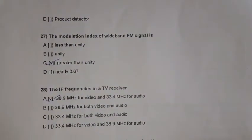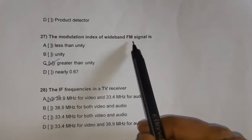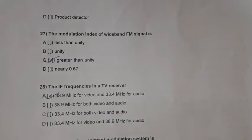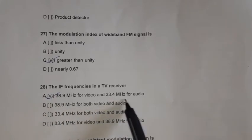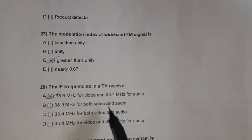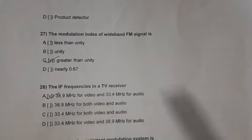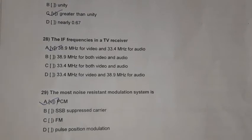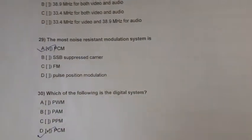Question 27: The modulation index of a wideband FM signal is always greater than unity. Question 28: The IF frequencies in a TV receiver are 38.9 megahertz for video and 33.4 megahertz for audio. Question 29: The most noise-resistant modulation system is PCM — pulse code modulation.